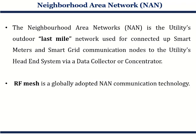Next we move on to neighborhood area network (NAN). As seen on the map, NAN is the network at the distribution site — we can say it is the last mile for the utility. From generation to the consumer, it is the last point where connectivity reaches the customer. This is the point where most data is collected from users and transferred to the utility's head-end system via a data collector or concentrator.